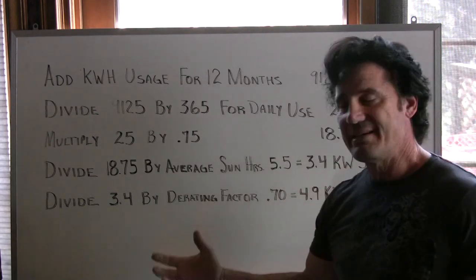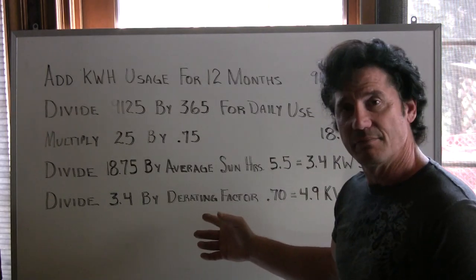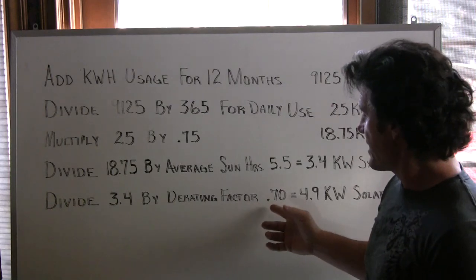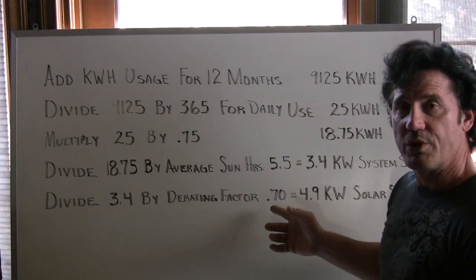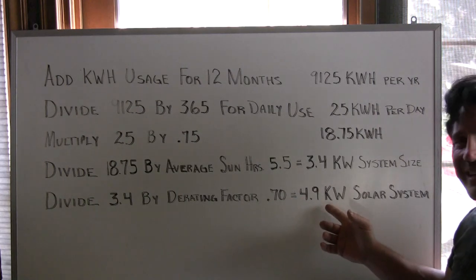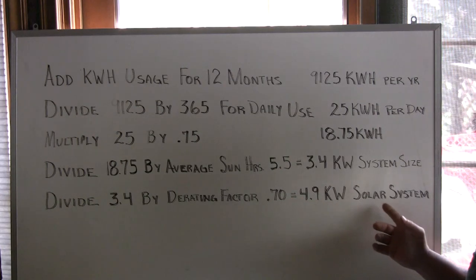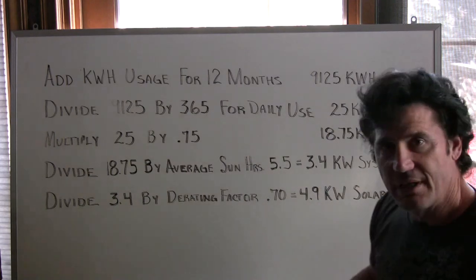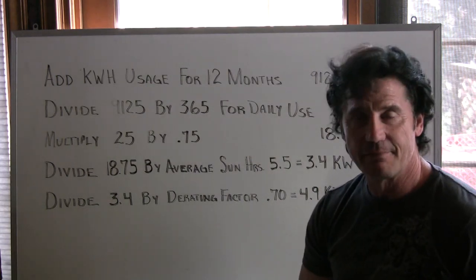Now we have to divide that by your derating factor, which is going to be 0.70. When you do that, it comes up to a 4.9 kilowatt solar system. That is the size of the system you're actually going to need.